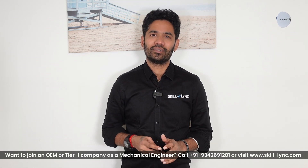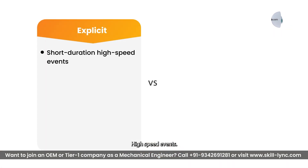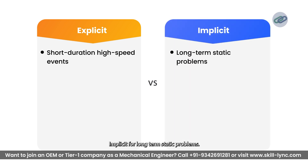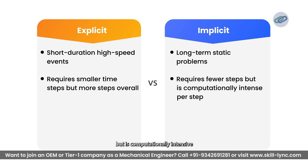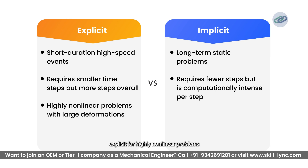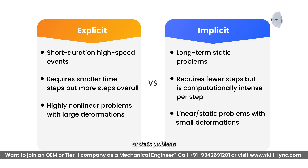The key difference between choosing explicit and implicit methods depends upon time sensitivity: explicit for short duration, high-speed events; implicit for long-term static problems. Regarding computational cost, explicit methods require small time steps but more steps overall, while implicit requires fewer steps but is computationally intense at every step. When considering problem type, use explicit for highly non-linear problems with large deformations, and implicit for linear or static problems with small deformations.